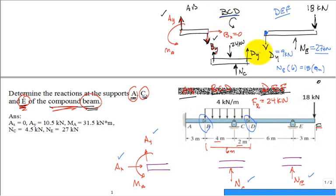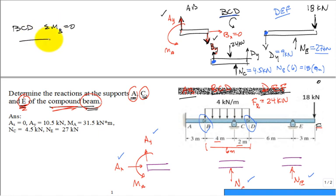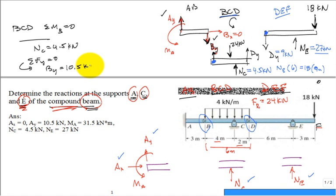Moving to member B-C-D with D_y = 9 kN acting on it and the 24 kN distributed load resultant: summing moments about point B gives N_C = 4.5 kN. Then summing forces in y for member B-C-D gives B_y = 10.5 kN.